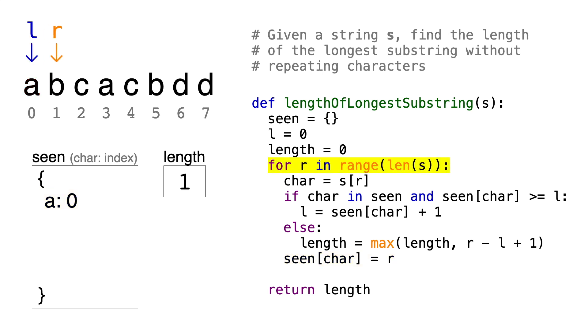Then we'll go on to the next letter, B. This is the first time we've seen the letter B, so we can add it to our substring, and now the length is 1 minus 0 plus 1, which is 2. Then, we'll record the index of B, which is 1.